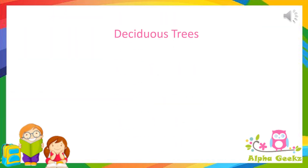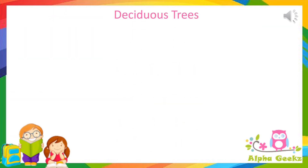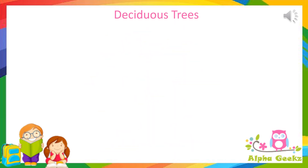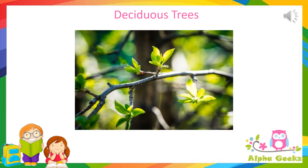Deciduous trees: Most trees growing in plains usually shed their leaves in winter to protect themselves from cold weather, and get new leaves again in spring. Such trees are called deciduous trees.